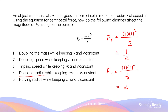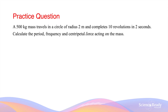Both mass and velocity are directly proportional to centripetal force, while the relationship between centripetal force and radius is inversely proportional. Note that it is v squared that is directly proportional to centripetal force. Now let's look at another question: a 500 kg mass travels in a circle of radius 2 m and completes 10 revolutions in 2 seconds. Calculate the period, frequency, and centripetal force acting on the object.